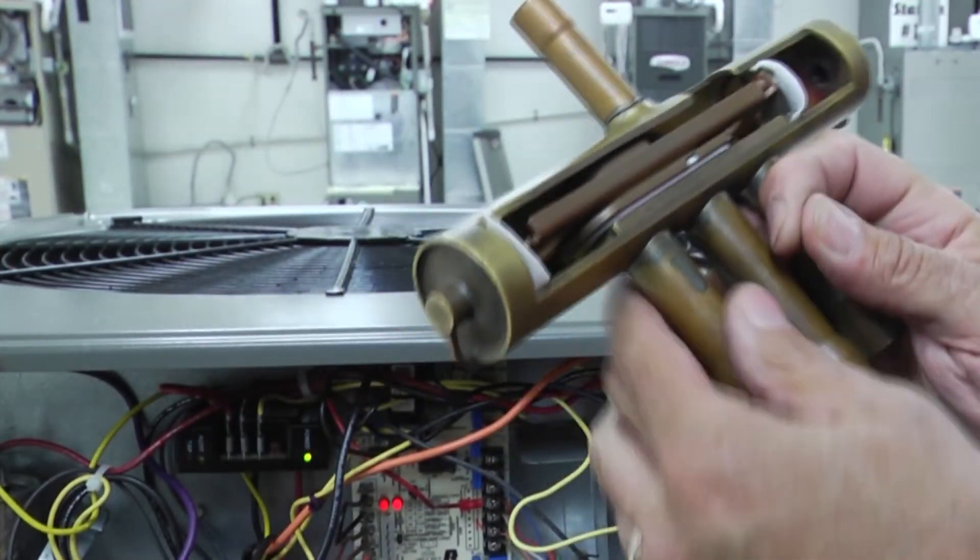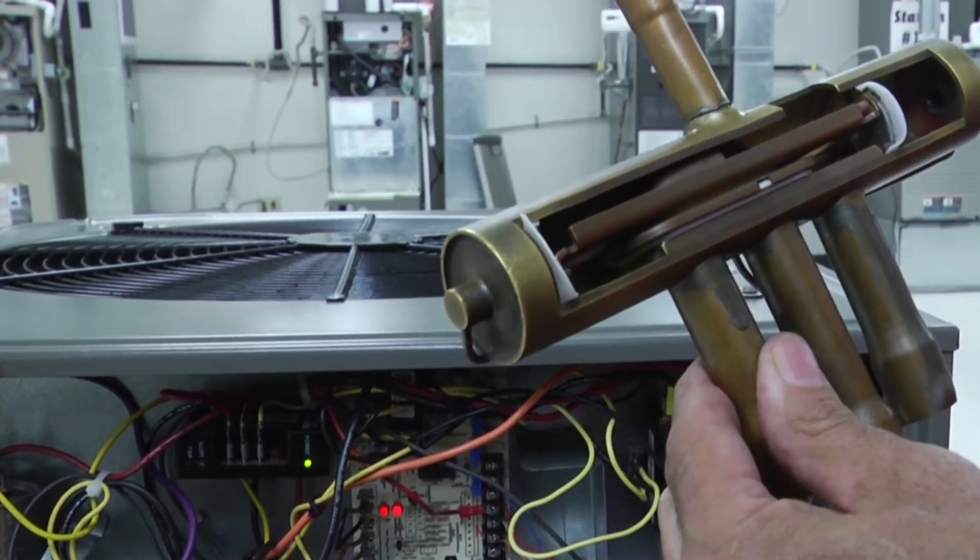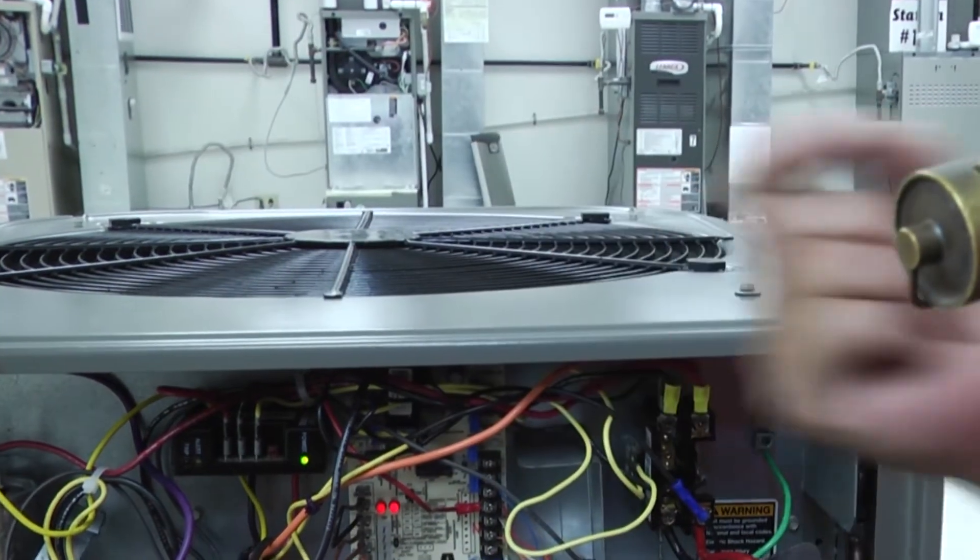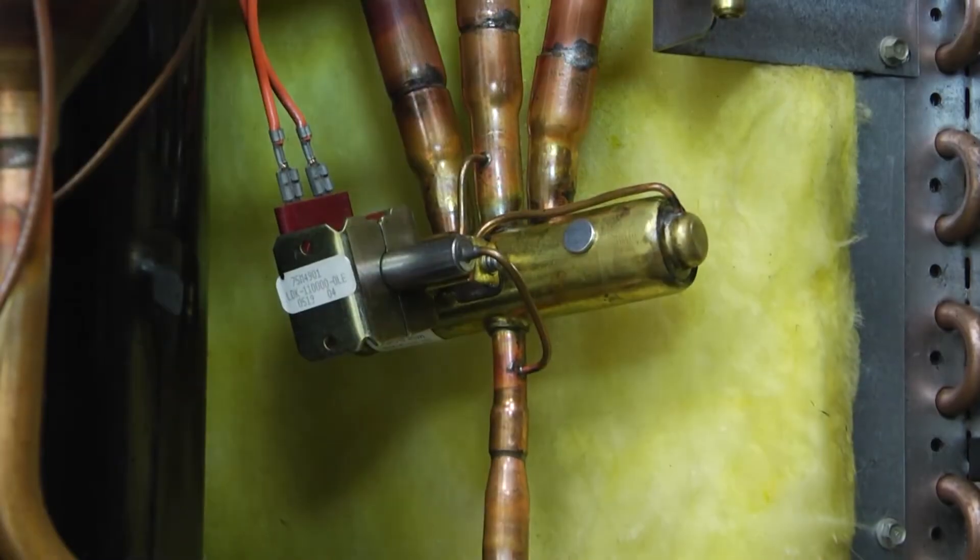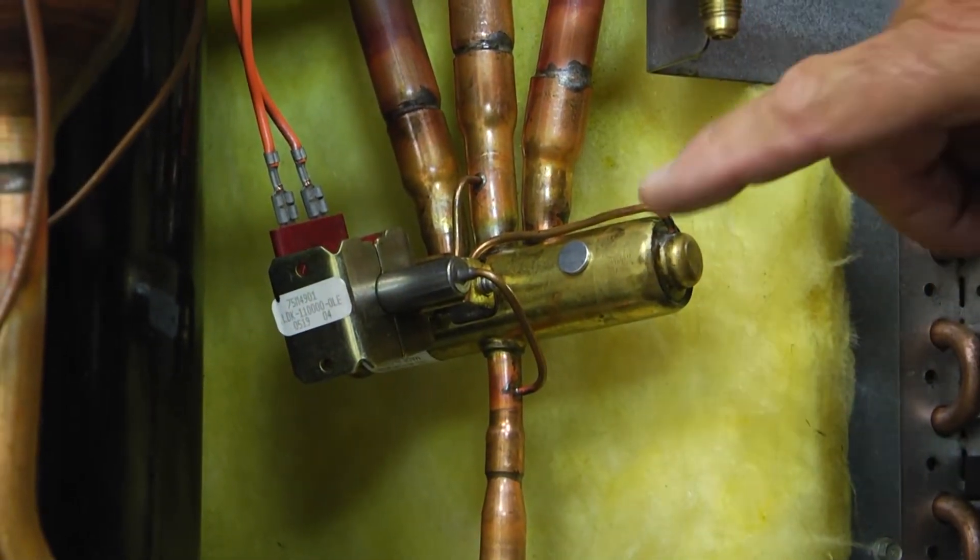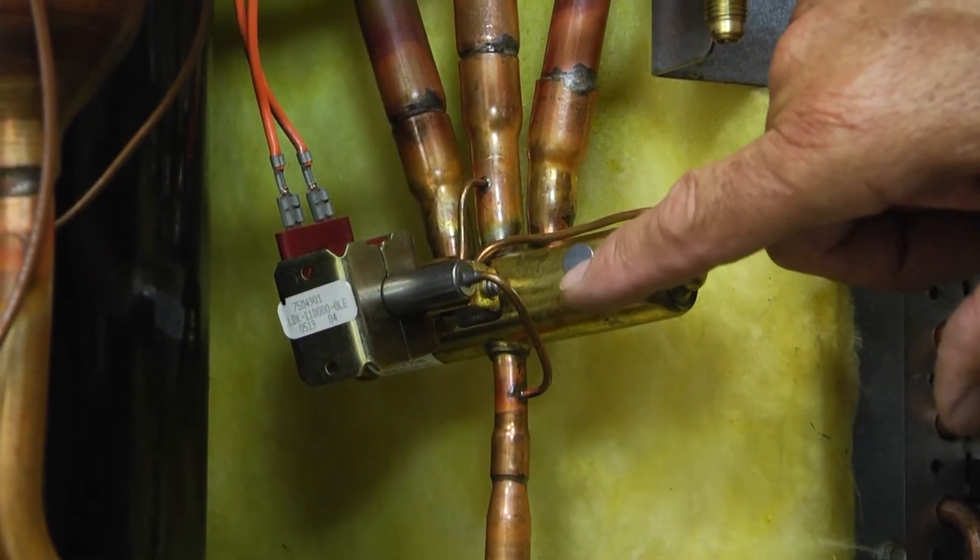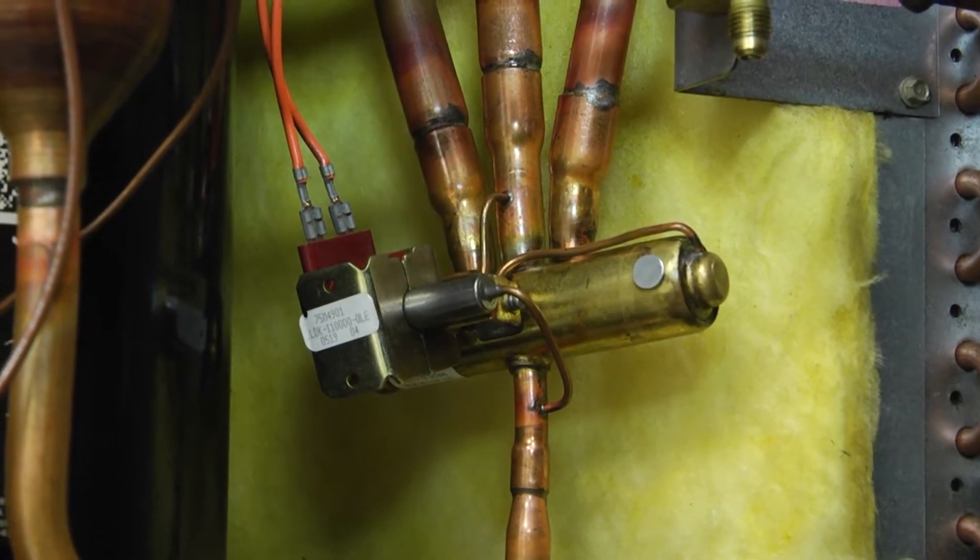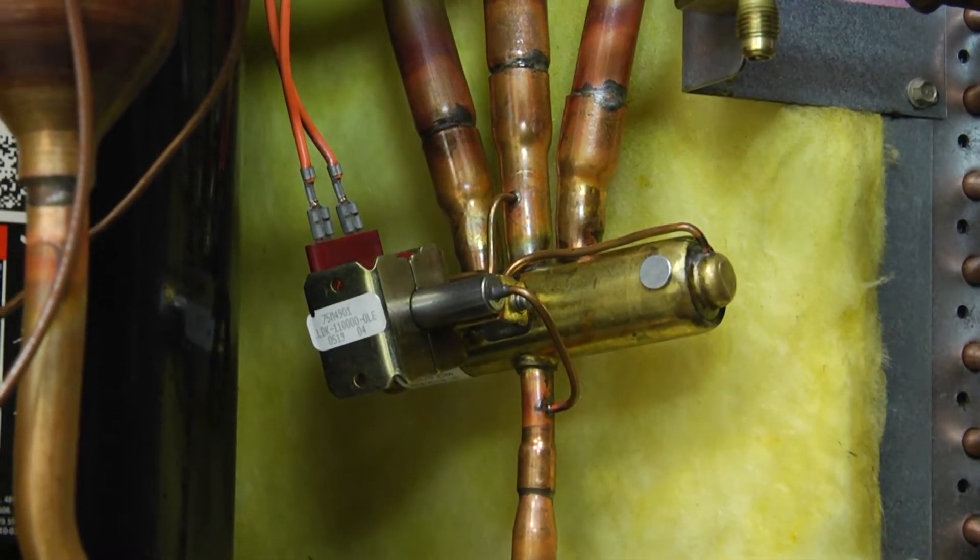So, what we'll do is now go to the live unit, put the magnet on it, and we're going to be able to watch it shift back and forth. So, this unit is running. We've got our magnet on our reversing valve. We're going to shift this to heating, and you can watch that magnet go back and forth.